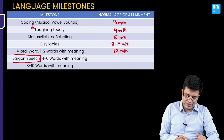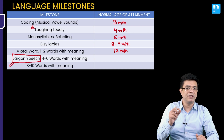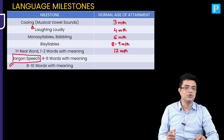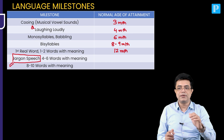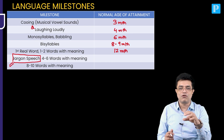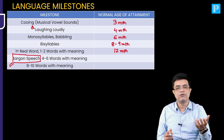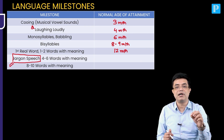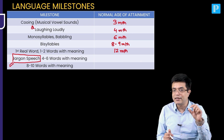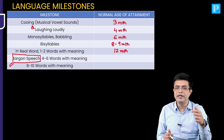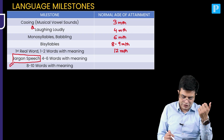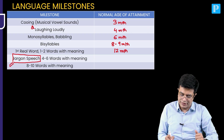Jargon speech means indicating common needs by simple nonsensical sounds. For example, a child needs water but cannot say 'water,' so he will say 'mum' — using that sound to indicate a common need. Jargon speech begins at 15 months of age.